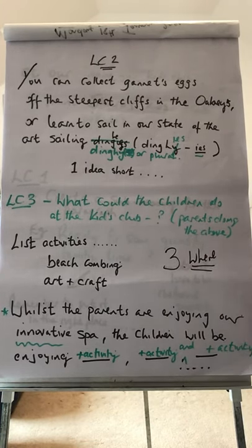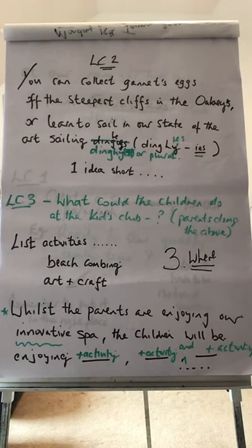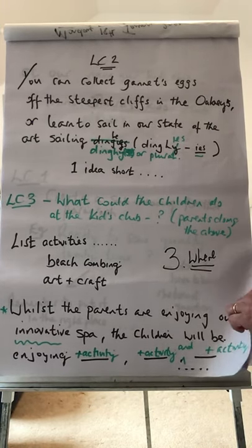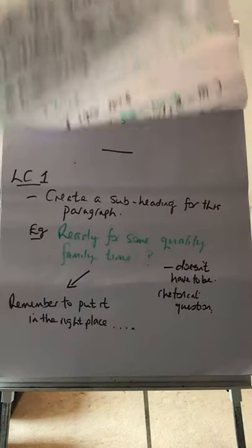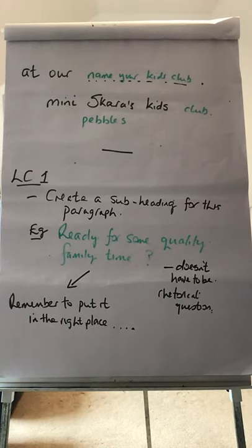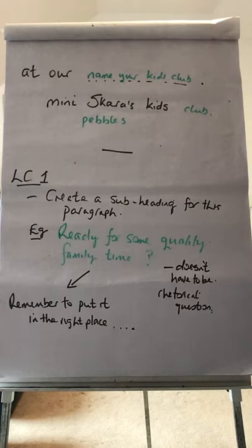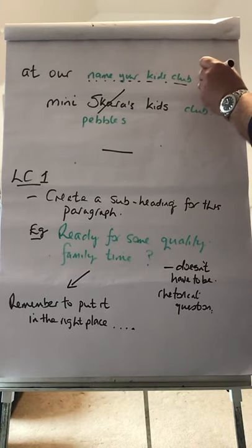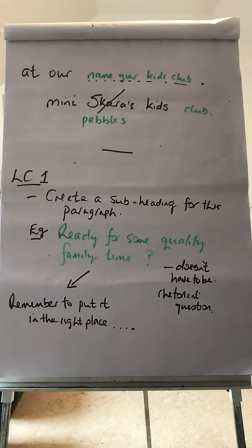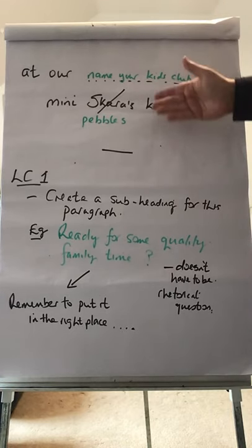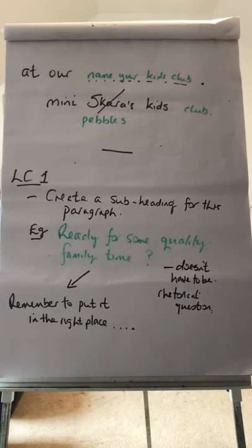You'll notice at the end of the sentence starter there's no full stop yet. So you've got your sentence starter, you add in your three activities, you put 'and' before the third, and you insert your commas. Then: 'enjoying these activities at our...' — and this is the last part of the sentence — you need to create a new name for the kids club. That's where your sentence will end. I thought initially 'mini scarers,' but I might actually use 'mini pebbles kids club.' The full stop ends the sentence. So three activities, then the kids club name ends everything.